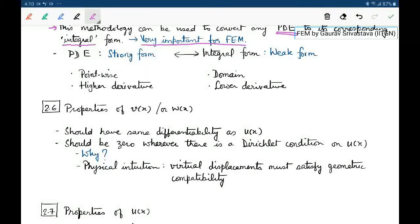We were saying that this PDE form we call the strong form and the corresponding integral form we call the weak form. So PDE form was form 1 and integral form was form 3.